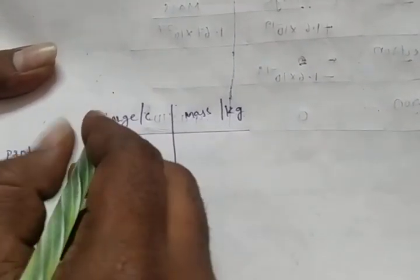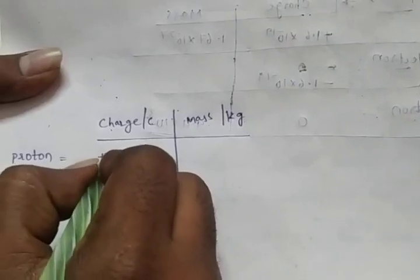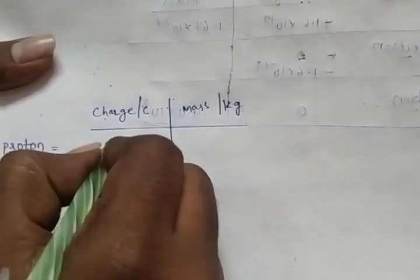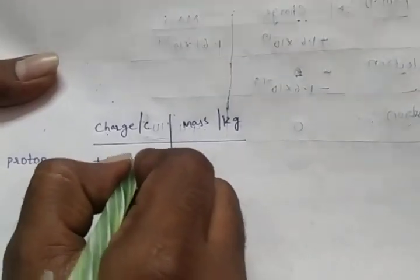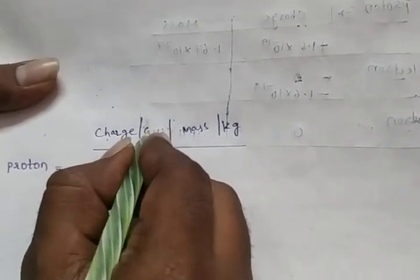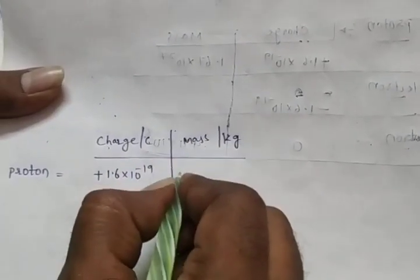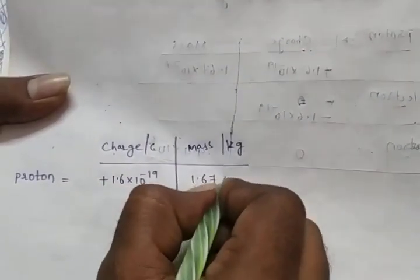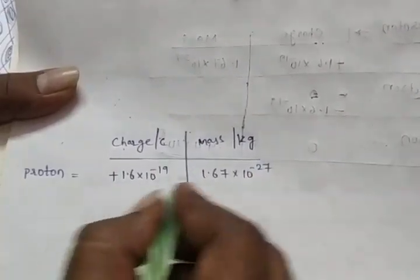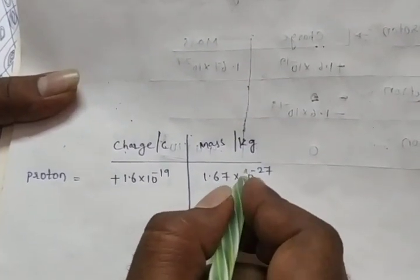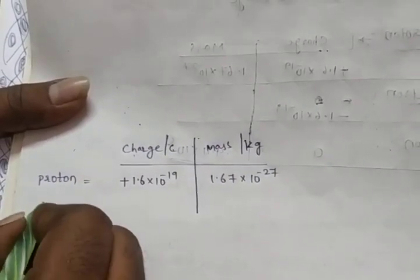First, the proton. Proton has a positive charge: plus 1.6 into 10 to the power of minus 19 Coulombs. The mass of a proton is 1.67 into 10 to the power of minus 27 kilograms.